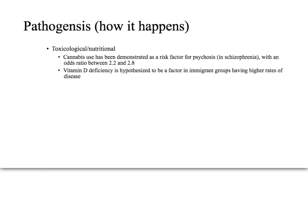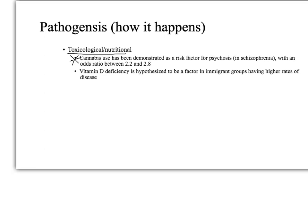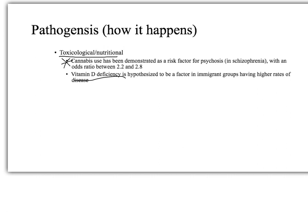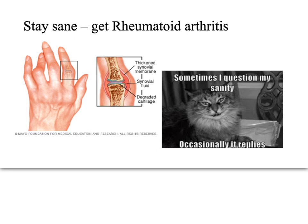In our case, the urinalysis showed positive tetrahydrocannabinol. Under toxicological and nutritional causes, cannabis use is the only toxicological cause, associated with an odds ratio of 2.2 to 2.8 for the risk of schizophrenia. Vitamin D deficiency is also linked to increased chances of developing the disease.